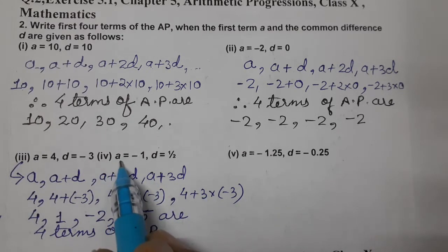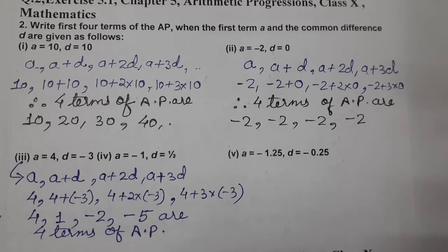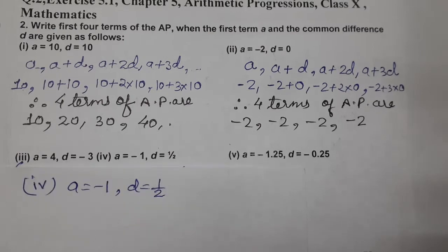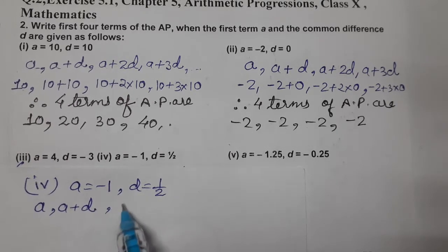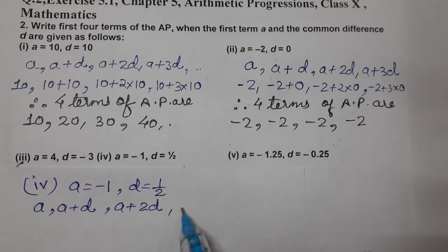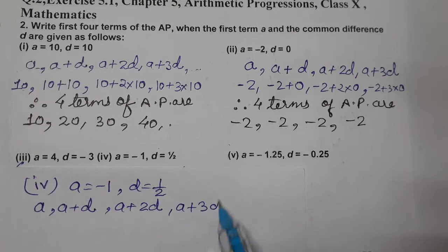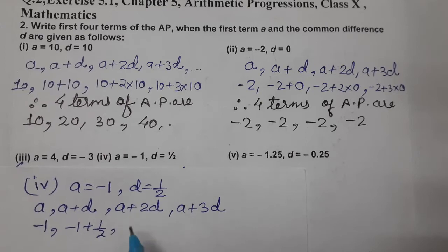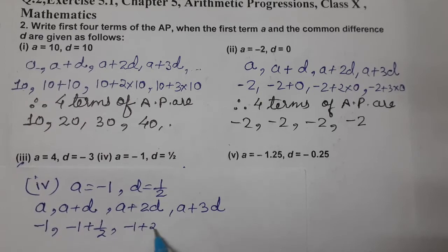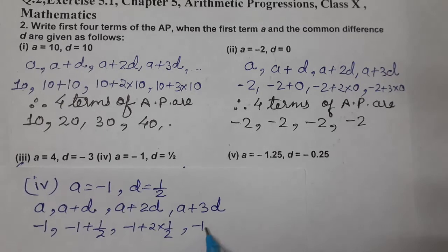Next comes 4th one. Now, we will do 4th one also. So, let's do 4th one. A is minus 1, D is half. So, we know AP is A, A plus D, A plus 2D and A plus 3D. These are the 4 terms of AP. Just put the values, A minus 1, minus 1 plus D is 1 by 2, minus 1 plus 2 into 1 by 2, and minus 1 plus 3 into 1 by 2.